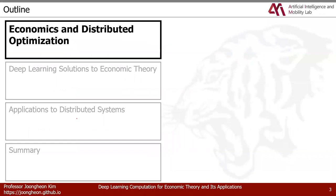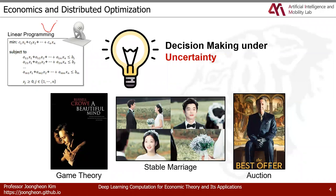First, let me explain why we need economic theory and what distributed optimization is. If you want to solve any real-world problem, you make an optimization formulation — linear programming or convex programming — to get an optimal solution. However, knowing all the information about variables and constraints is a huge burden. That's why we need to make decisions under uncertainty, using microeconomic theory: game theory, stable marriage theory, or auction theory.